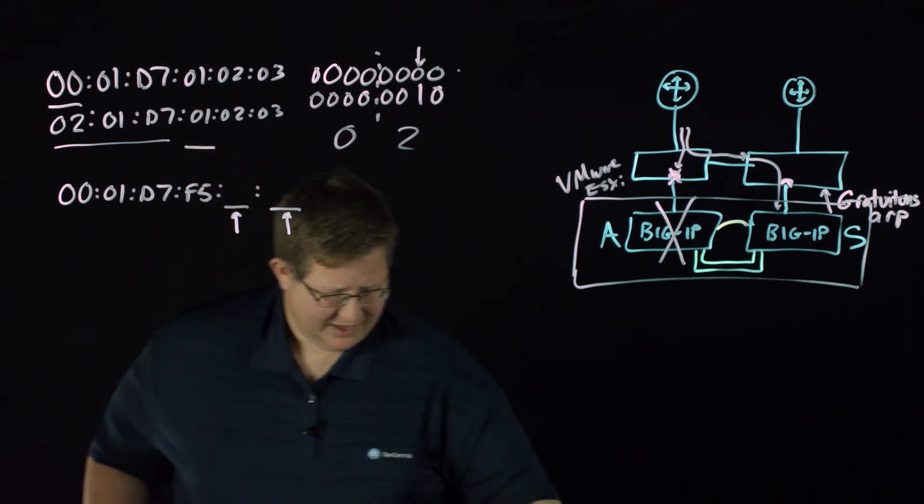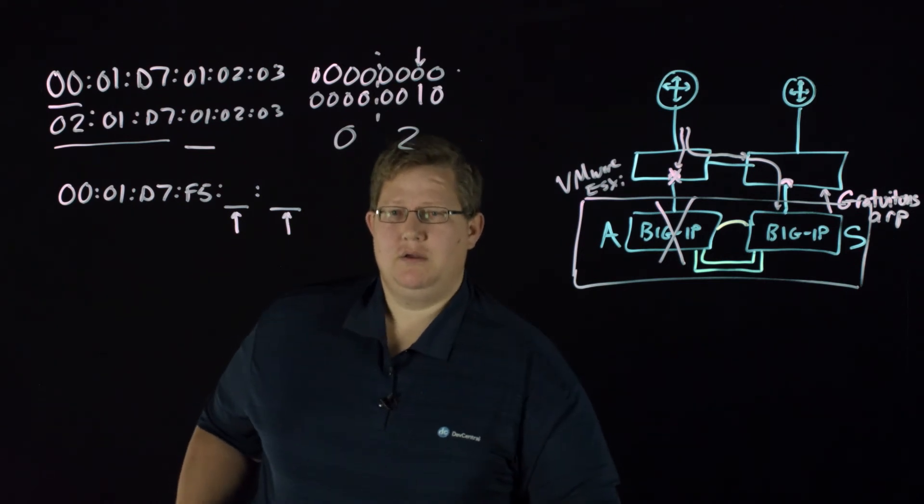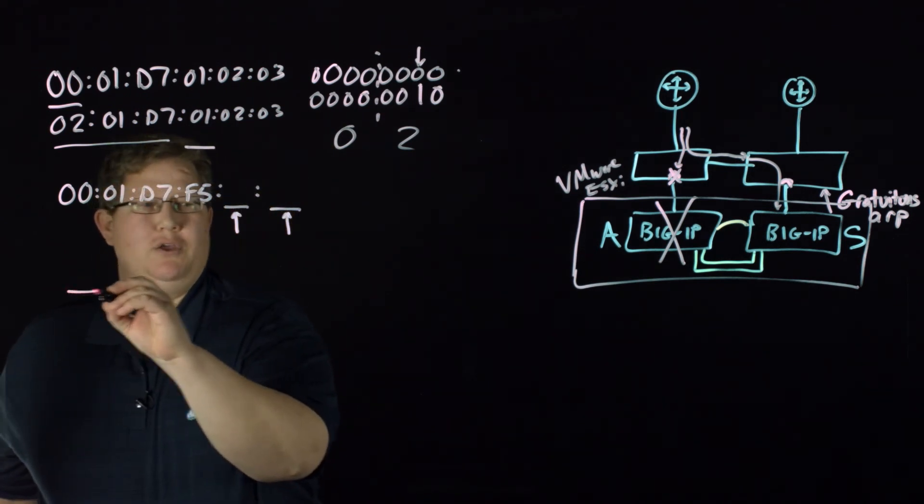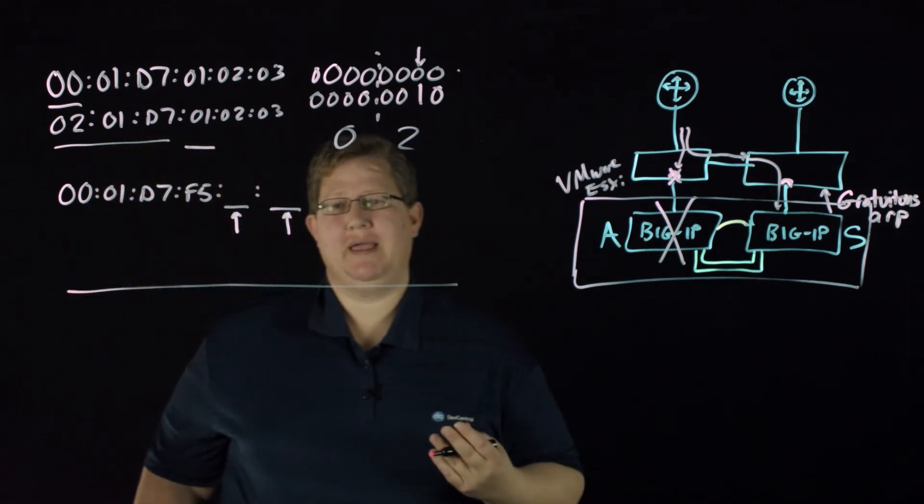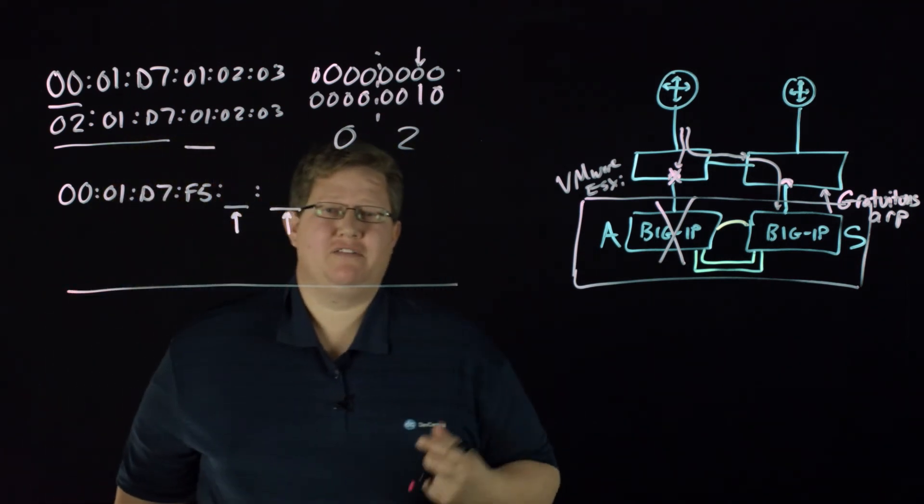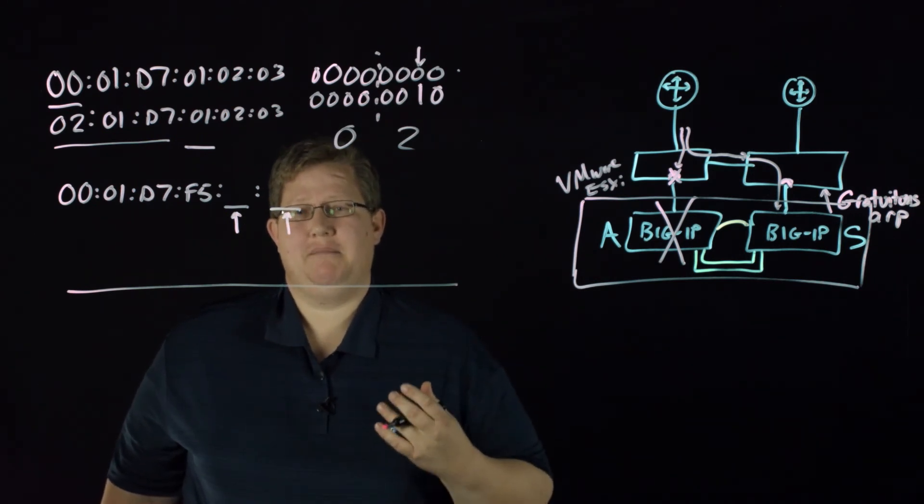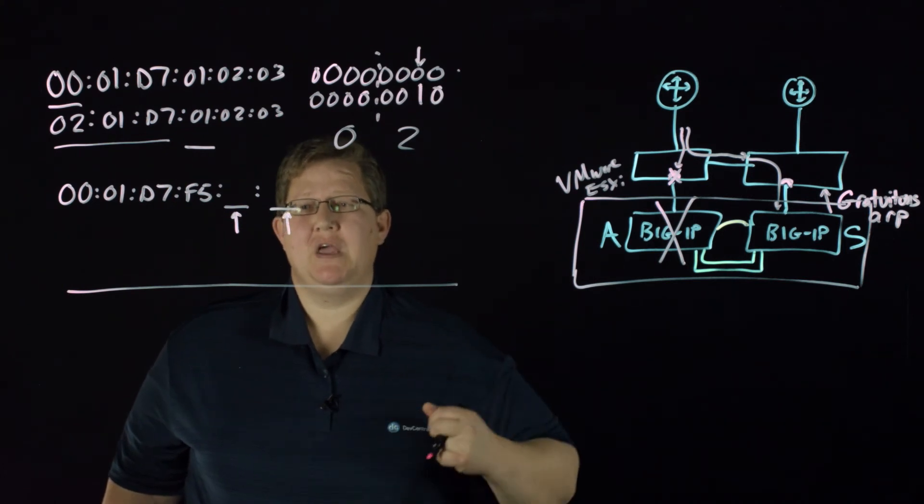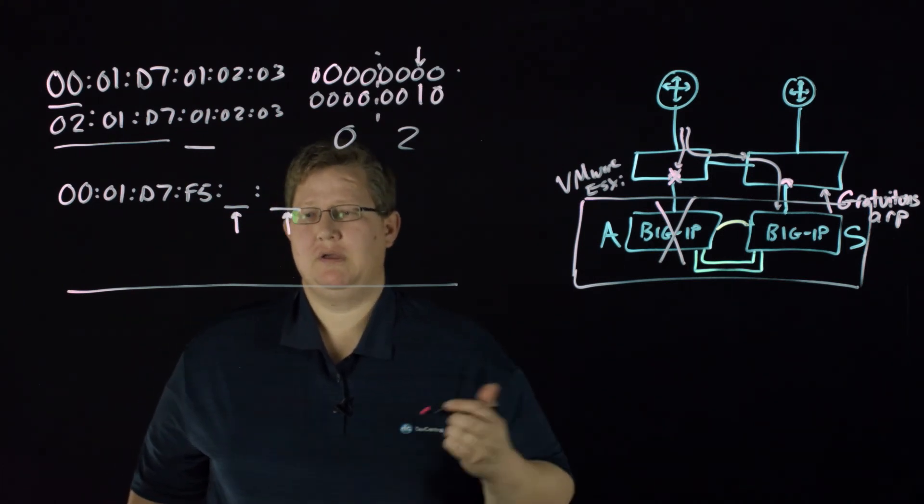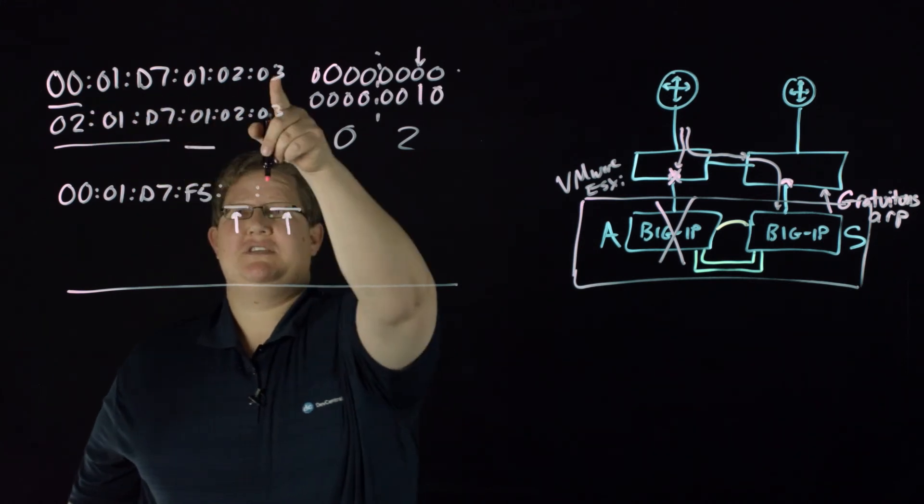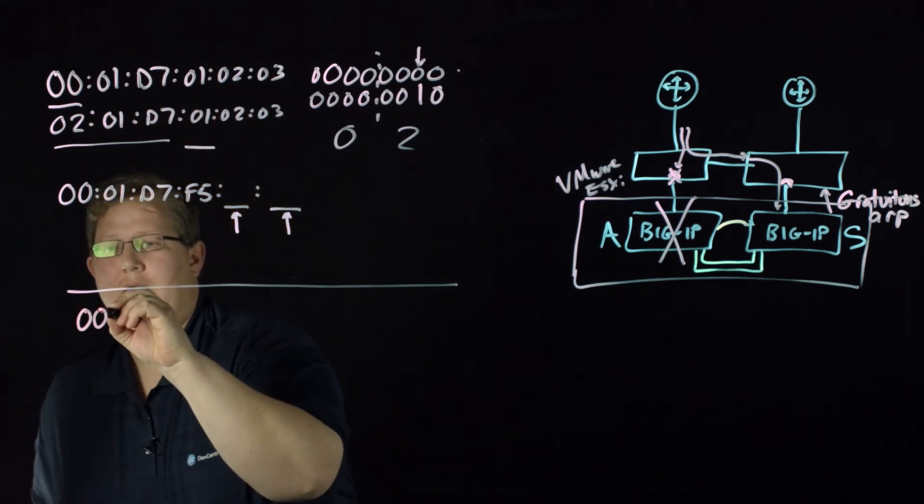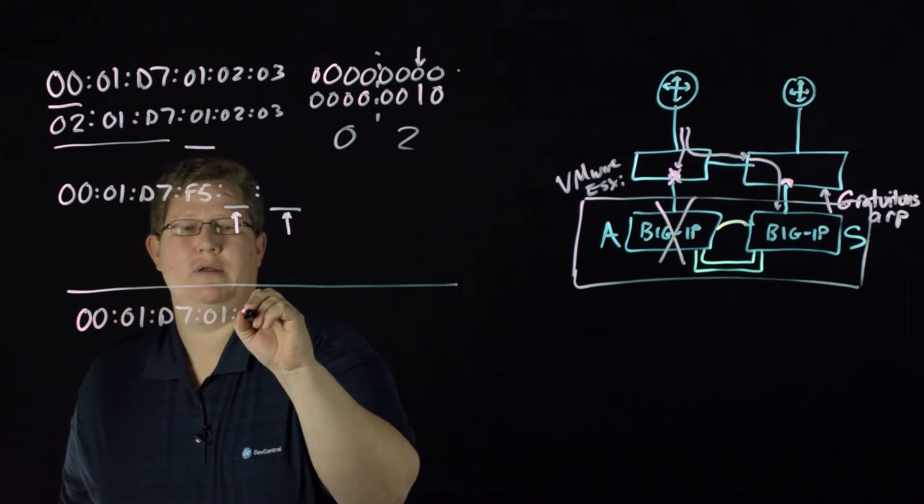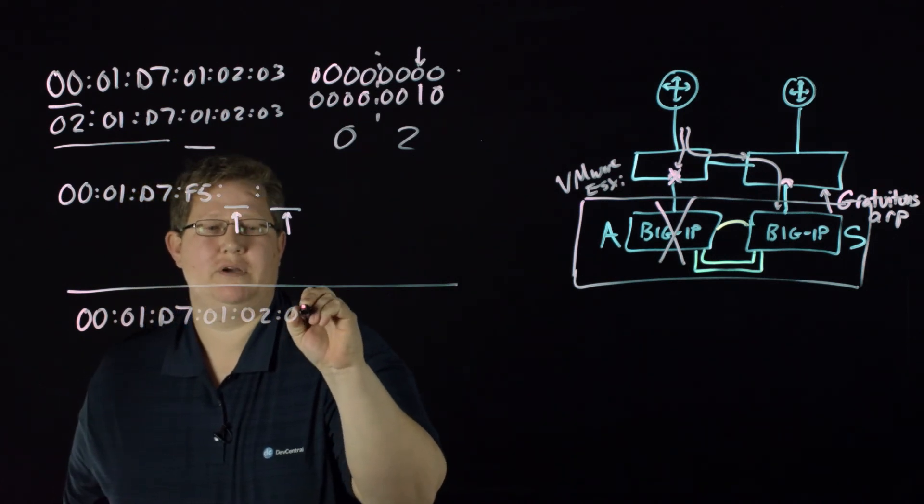And then we have another situation where you can set up per VLAN MAC Masquerade. There's a database key, tm.macmasquerade_per_VLAN. If you set that to true and you set up a base MAC address, so let's use the same address we're using up here: 00:01:D7:01:02:03.